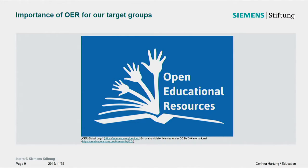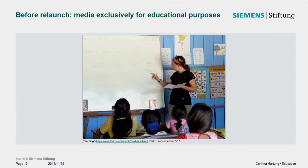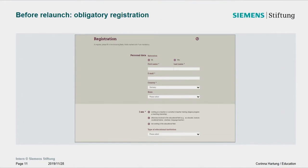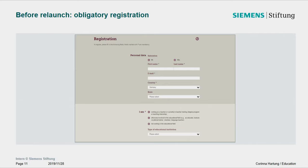Siemens Stiftung fully supports the OER movement and its goals. Our target groups — especially in Latin America and Africa — need free and adaptable materials. When we started the media portal 10 years ago it wasn't an OER portal, because we received many materials only on condition they be used exclusively for educational purposes. This meant users had to register and prove they worked in education — which clearly contradicts the idea of open educational resources.